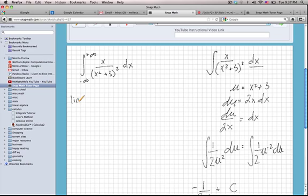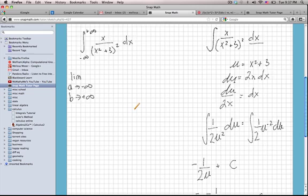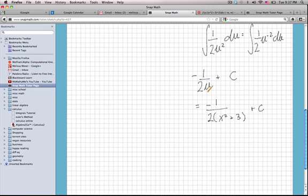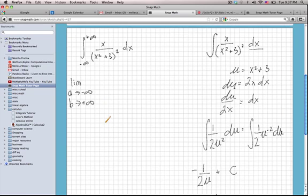So that this is actually the limit as a goes to negative infinity and b goes to positive infinity of my evaluated integral. I can drop the plus c since I'm actually going to evaluate it in this step. So this is going to be negative 1 over 2 times x squared plus 3 from a to b.